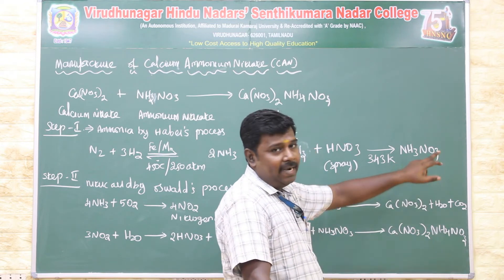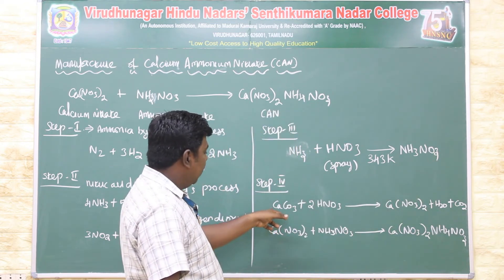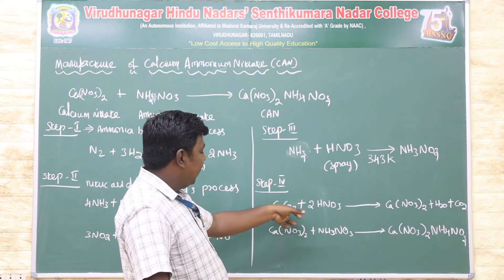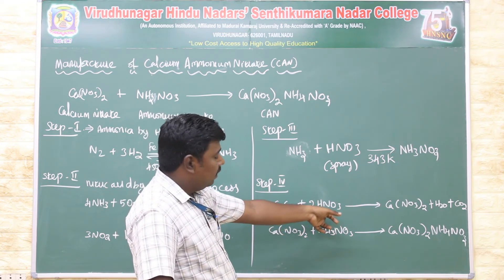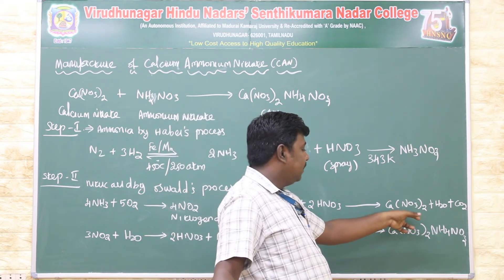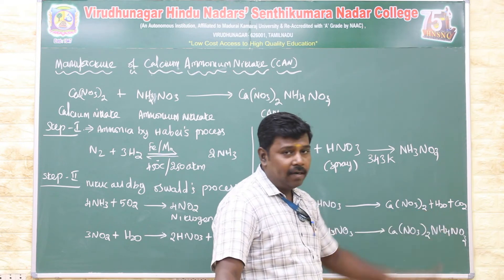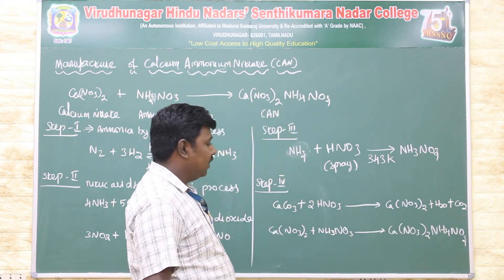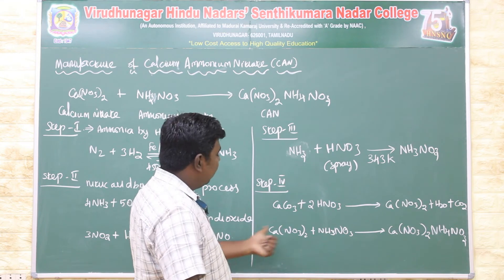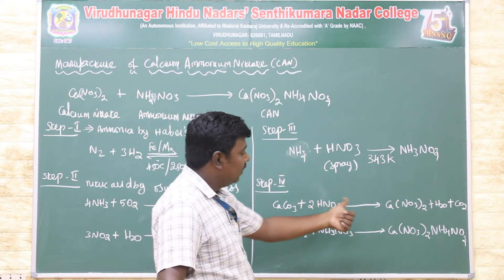Step four: calcium carbonate product, known as lime, is reacted with nitric acid. Lime plus nitric acid gives calcium nitrate and water, with carbon dioxide as a side product. So, calcium carbonate treatment with nitric acid yields calcium nitrate.